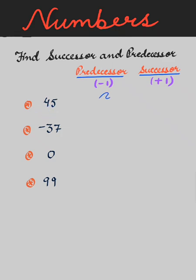The first number is 45, so its predecessor is 45 minus 1, that is 44, and its successor is 45 plus 1, that is 46.